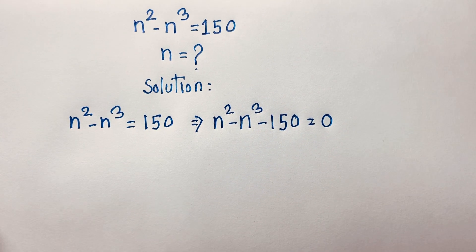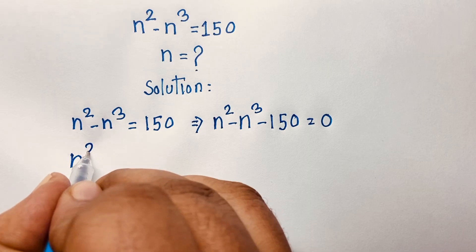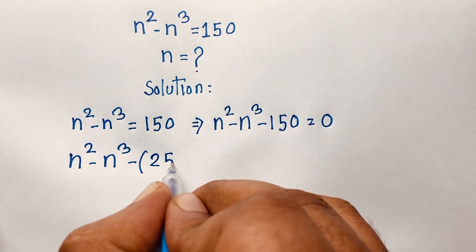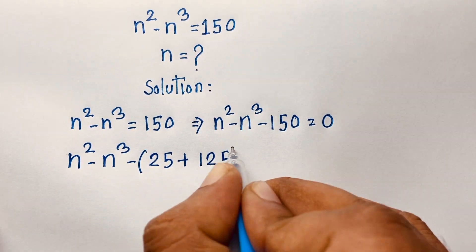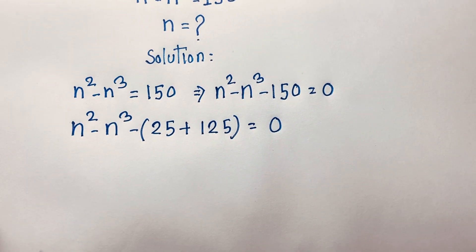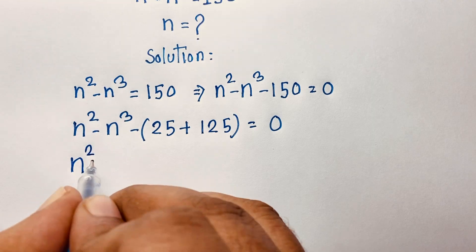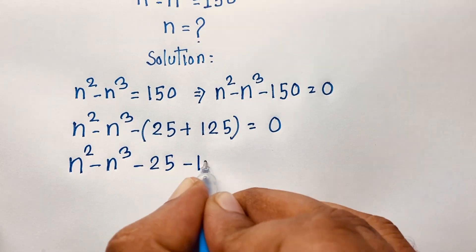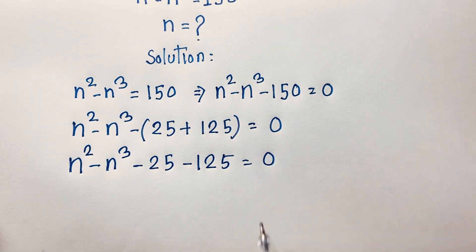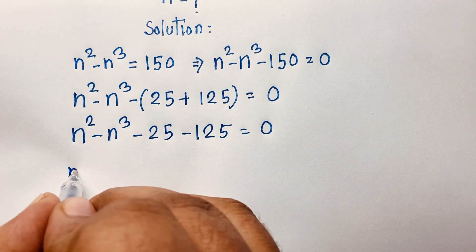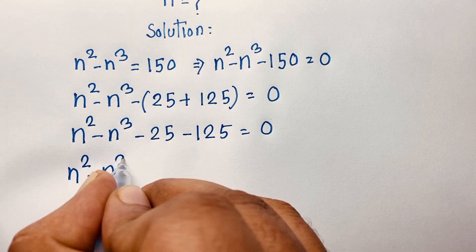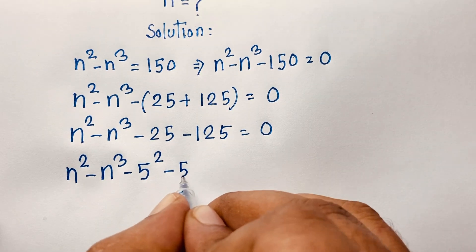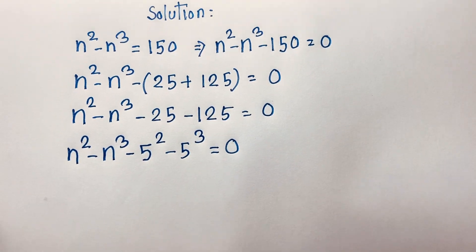Now I can see that this equation is n squared minus n to the power 3 minus 150 equals 0. I observe that 150 can be written as 25 plus 125. So we have n squared minus n to the power 3, minus 25, minus 125 equals 0. And we know that 25 is 5 to the power 2, and 125 is 5 to the power 3, so this equals 0.